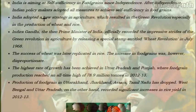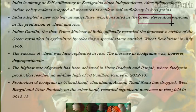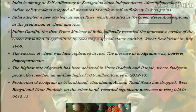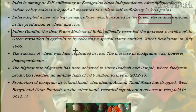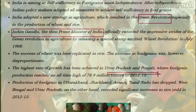India has made rapid strides in attaining self-sufficiency in food to provide food security to its large population. The introduction of the Green Revolution in India was marked by a dramatic increase in the production of food grains through modern farming. Prime Minister Indira Gandhi officially recorded the strides of the Green Revolution by releasing a special stamp entitled 'Wheat Revolution' in July 1968. The success of the Green Revolution was not uniform across India — in states like Punjab and Uttar Pradesh, wheat production increased by more than four times from 1965 to 1995, while Tamil Nadu and Andhra Pradesh saw significant rises in rice production.